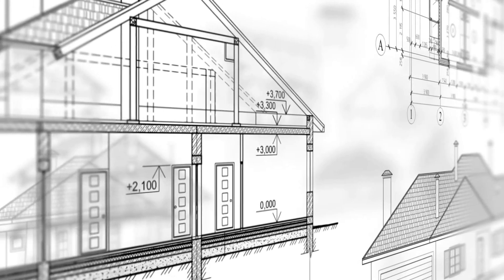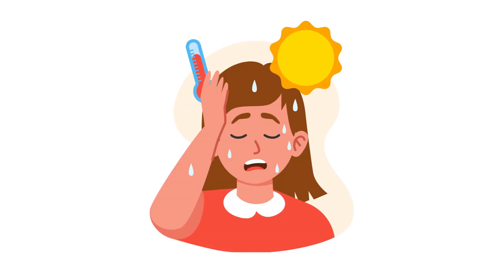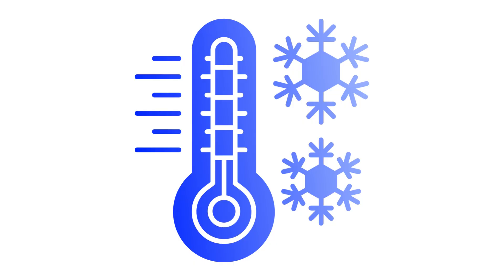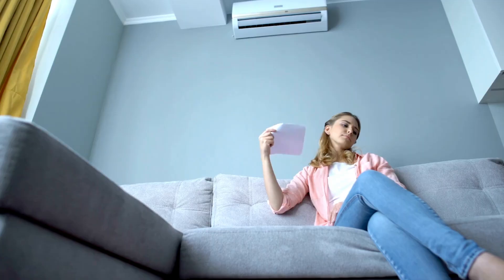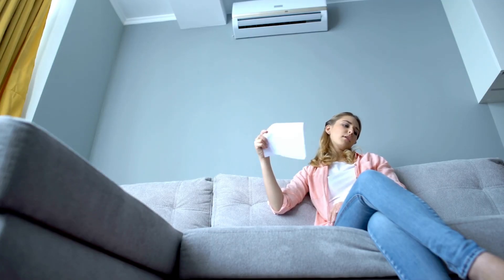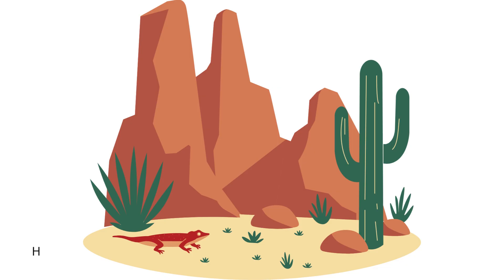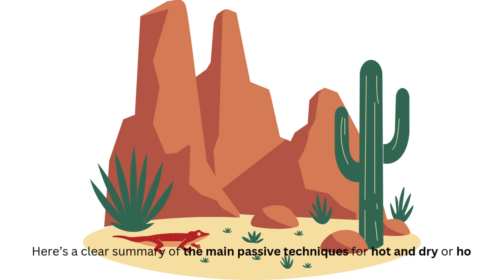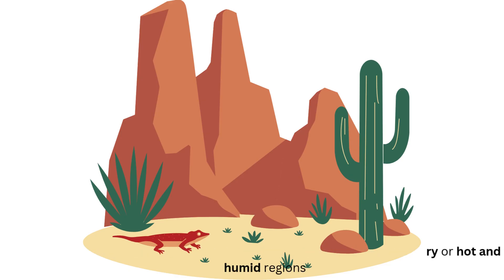In hot climates, passive design techniques aim to reduce heat gain, enhance natural cooling, and maximize comfort without mechanical systems like air conditioning. Here's a clear summary of the main passive techniques for hot and dry or hot and humid regions.